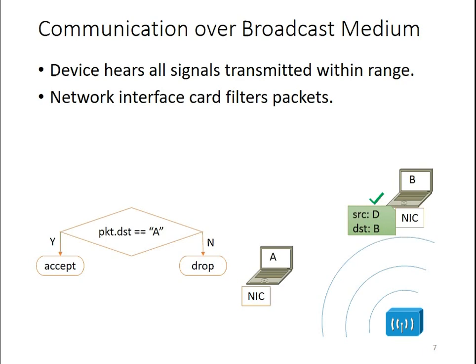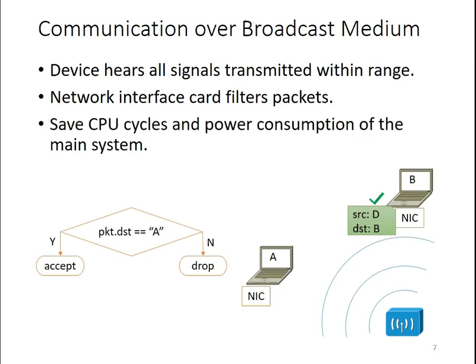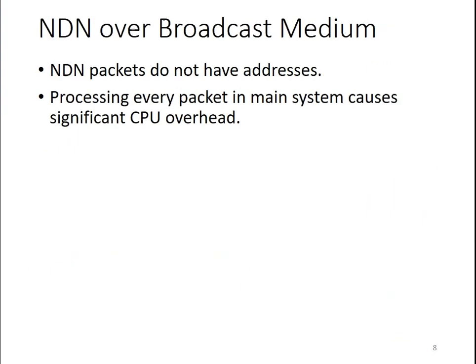Having this filter in hardware allows us to save CPU cycles and power consumption of the main system. But this filtering is only based on address. When we operate NDN over a broadcast medium, since NDN packets do not have addresses, every NDN packet would have to be processed in NFD in the main CPU, causing significant CPU overhead.